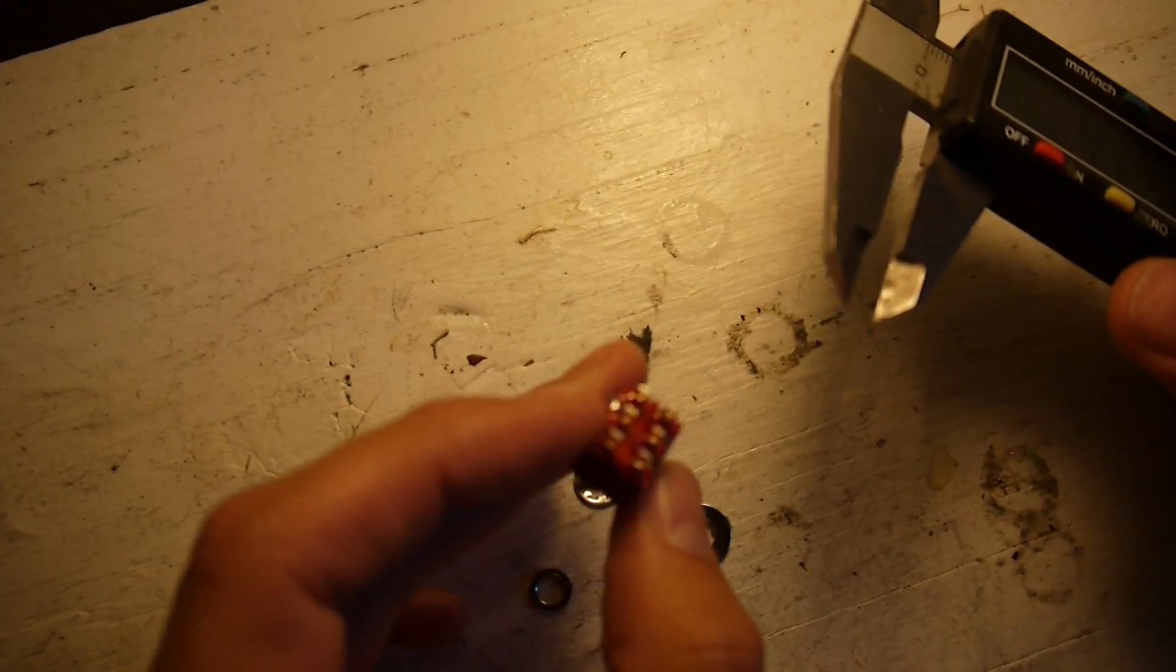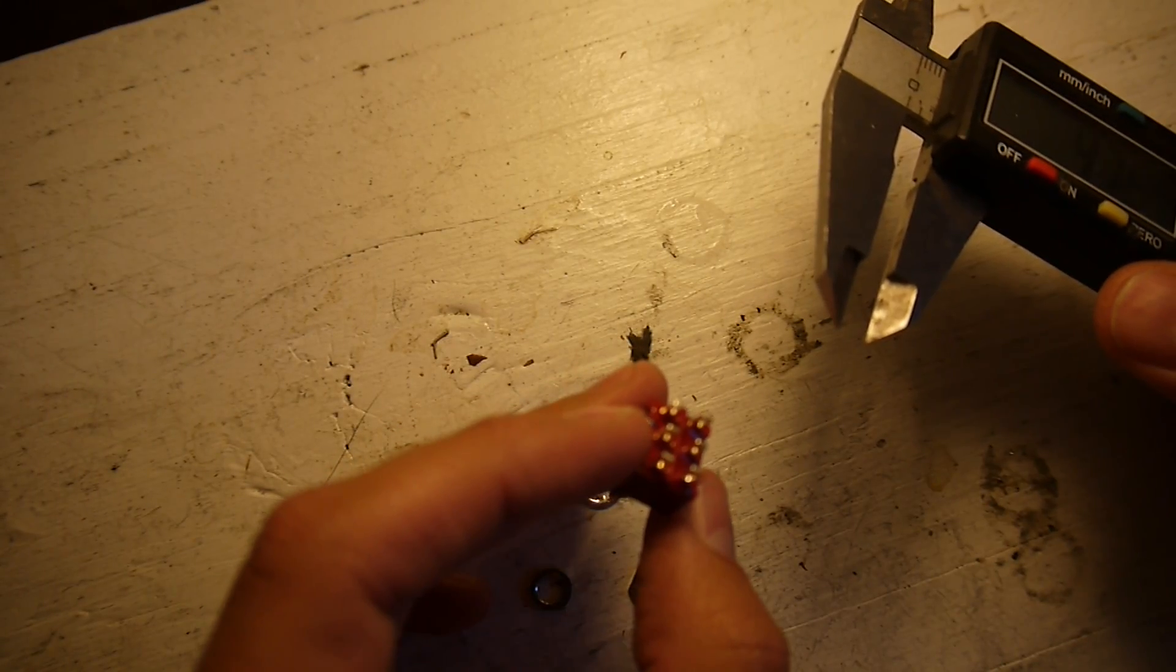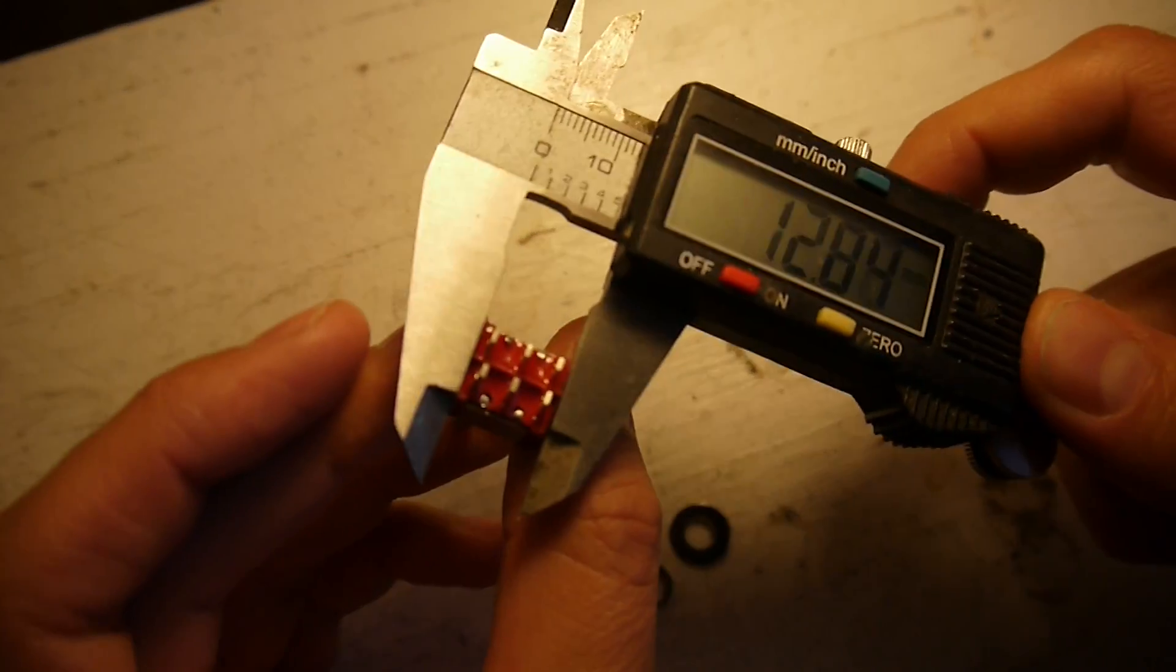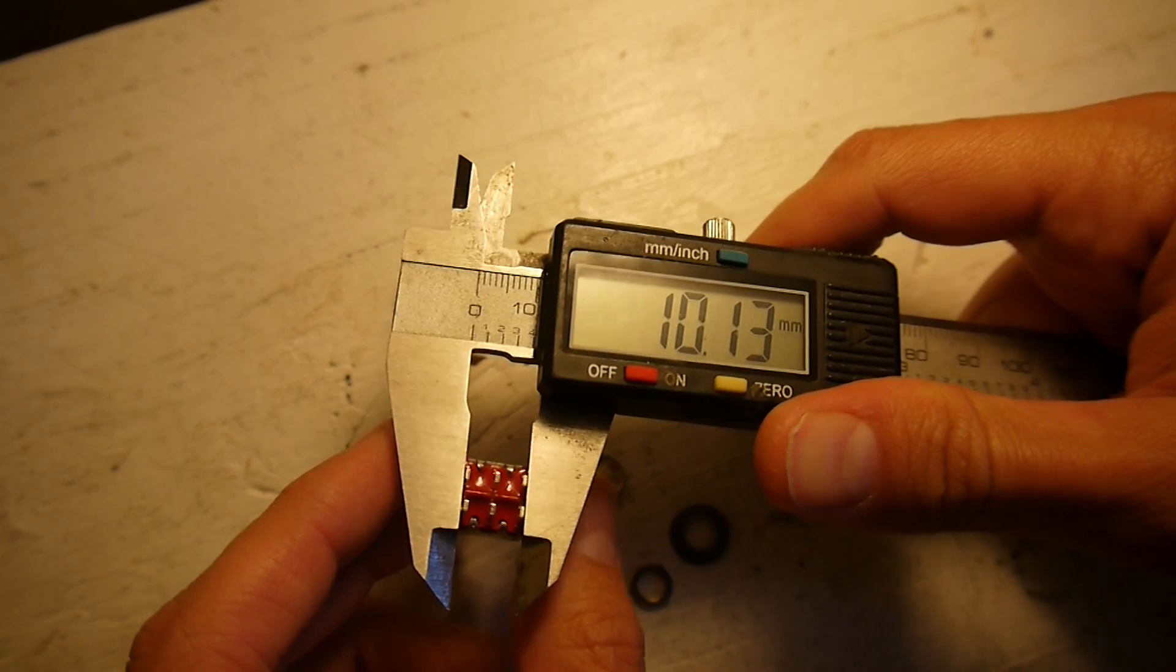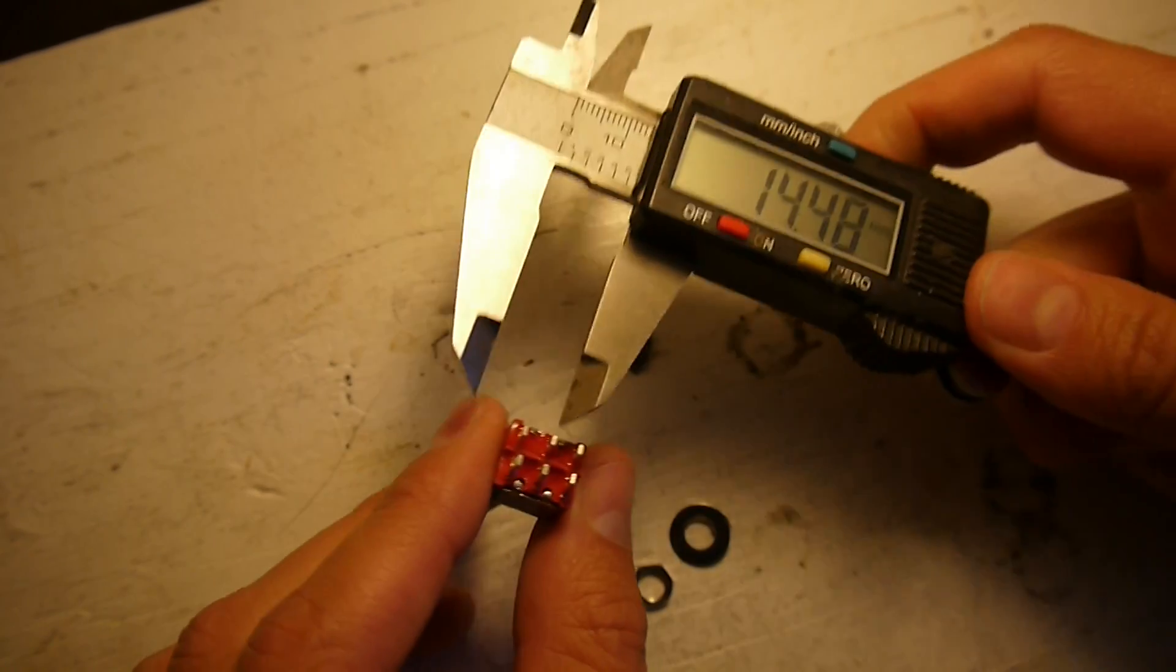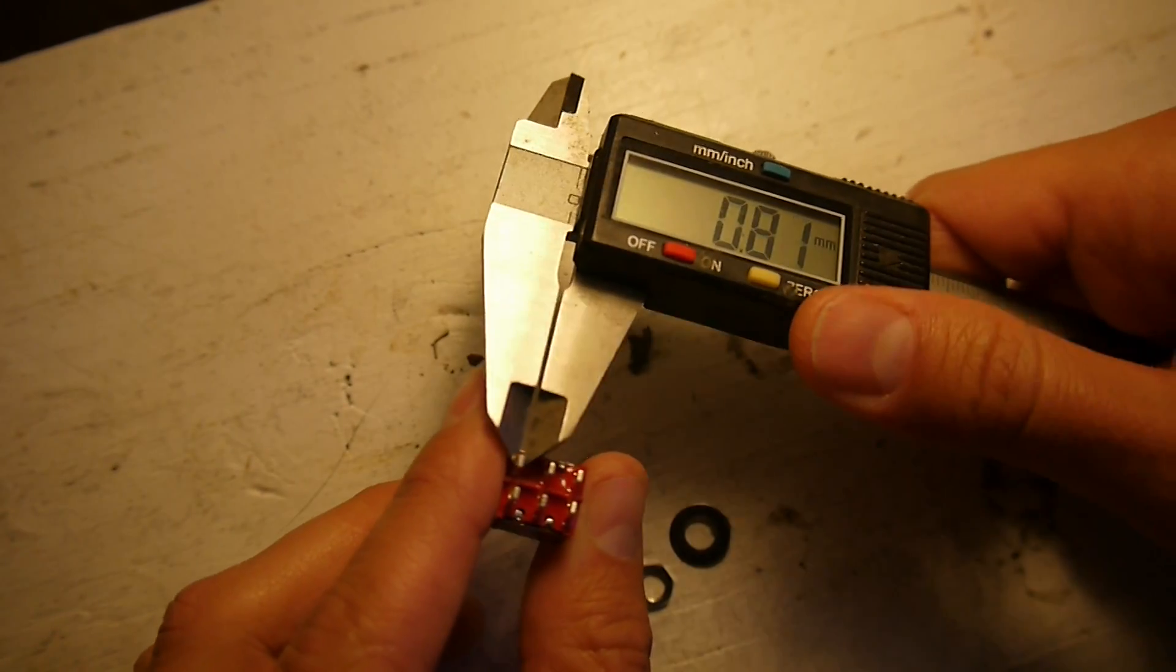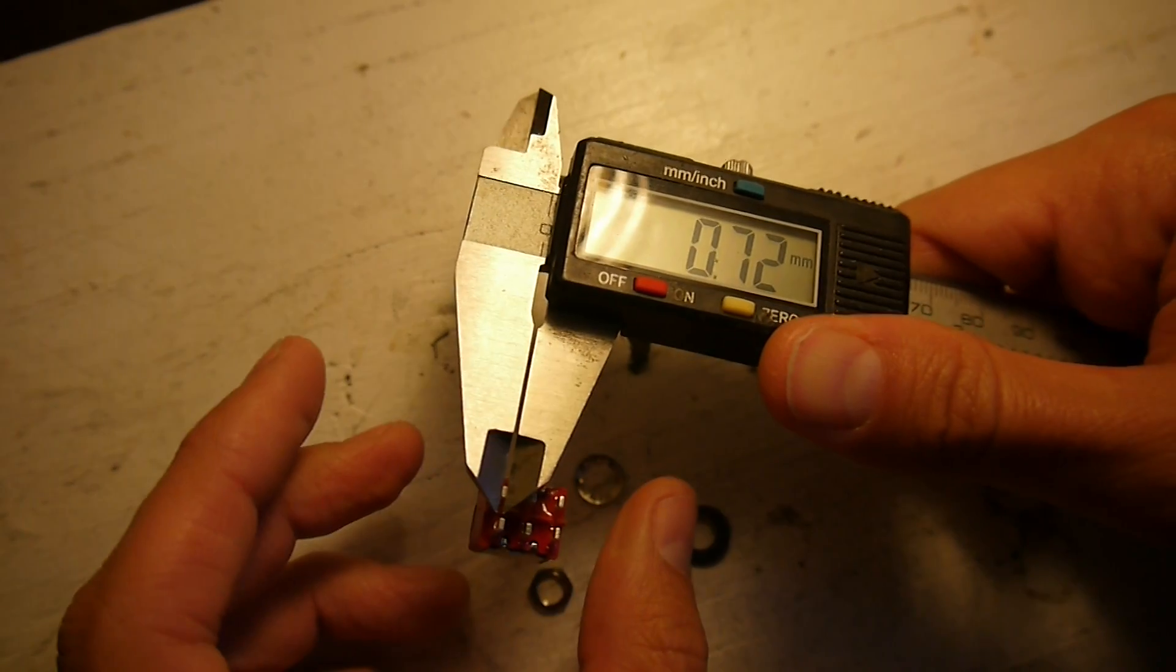Anything else that would be important? Let's just do the total outside of the lugs. 10.13. And then, these were what? These were 0.7, right? 0.70.